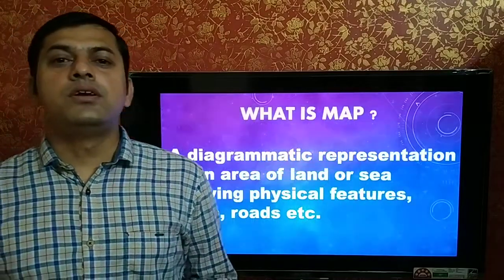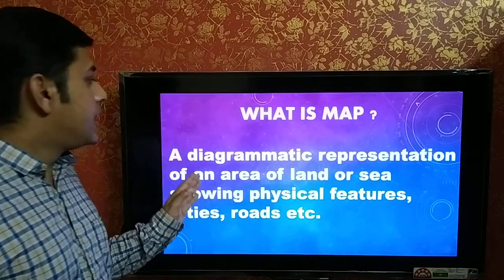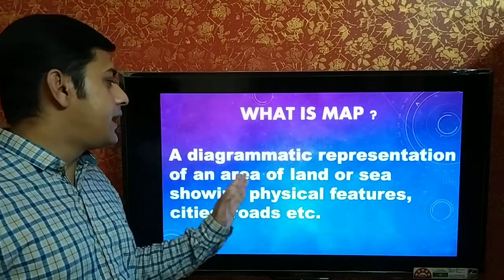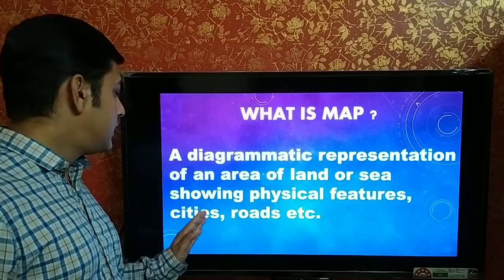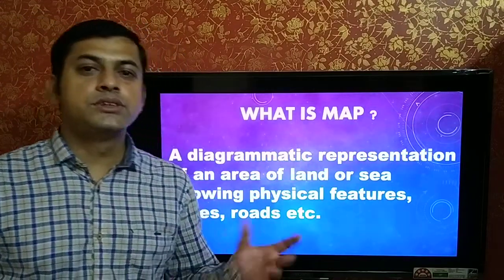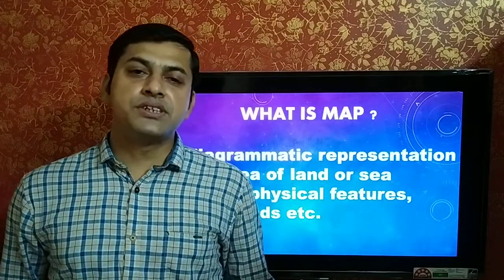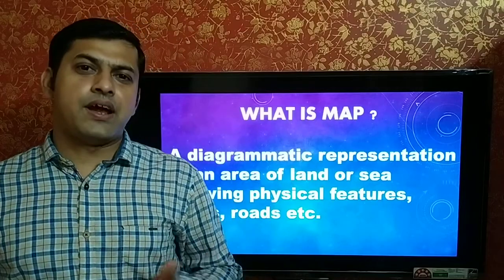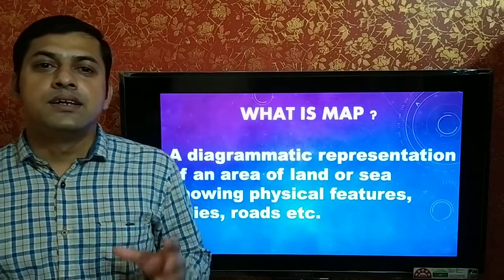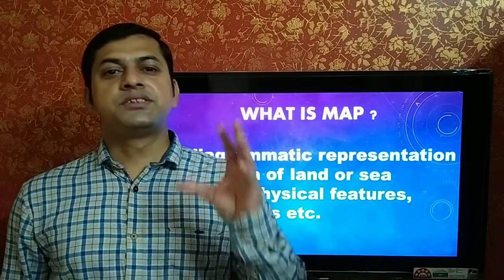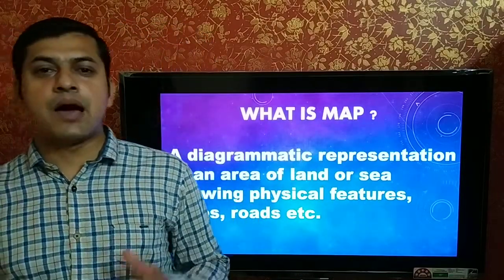First of all, you have to know what a map is. A map is a diagrammatic representation of an area of land or sea showing physical features, cities, roads, etc. In simple terms, a map is a two-dimensional representation on a flat piece of paper or any flat object. You have seen the globe — the globe is a miniature representation of the earth. It is a three-dimensional representation, and a map is a two-dimensional representation.